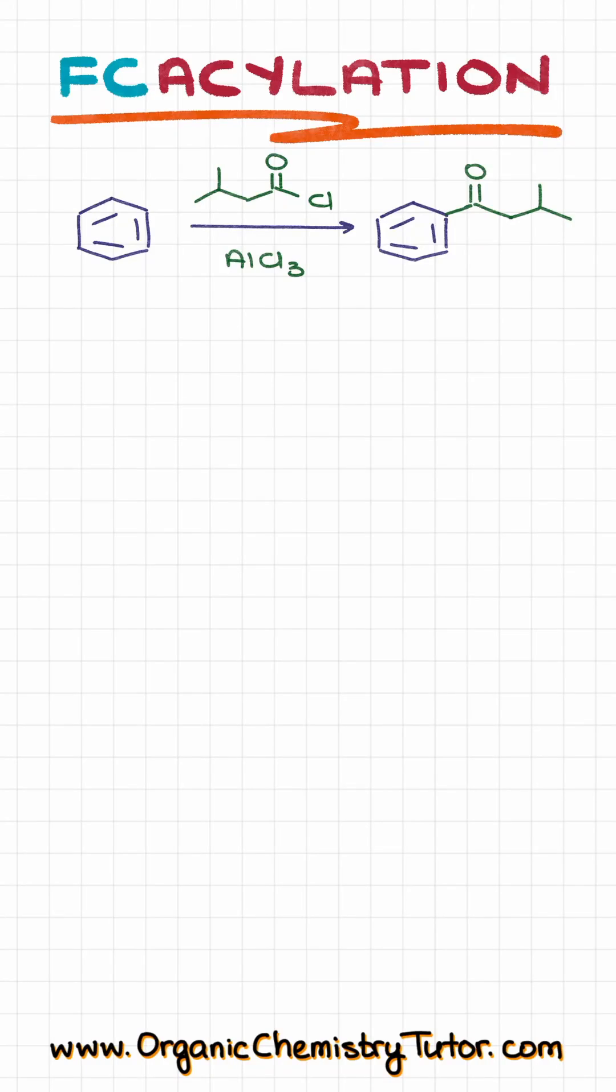Similar to Friedel-Crafts alkylation, the Friedel-Crafts acylation reaction starts by taking an aromatic compound and adding a new side chain to it. But unlike the alkylation reaction, instead of an alkyl group, we are making an aromatic ketone.